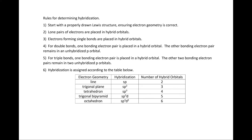For both carbon atoms and the oxygen atom, the number of hybrid orbitals is 4. Thus, the electron geometry of both carbon atoms and the oxygen atom is tetrahedral, and the hybridization of all atoms is sp3.